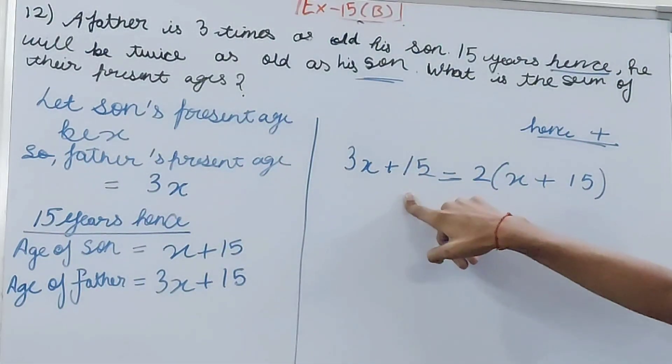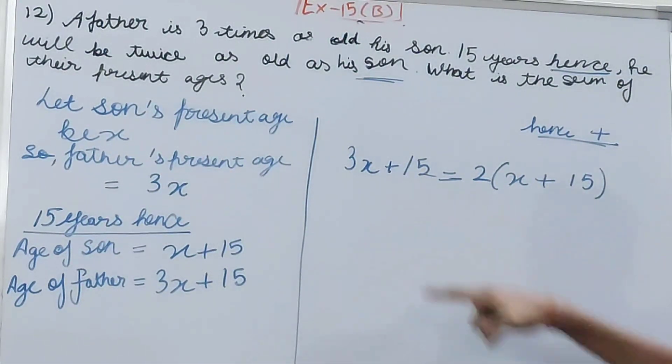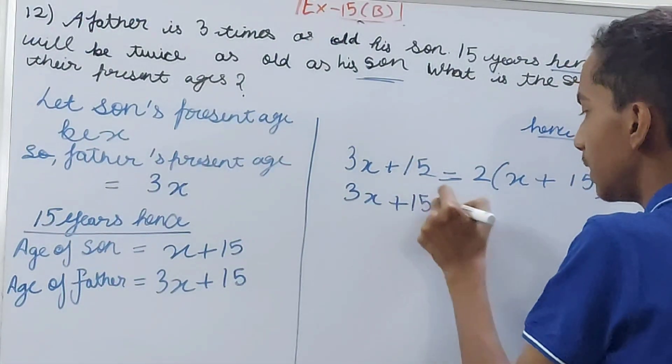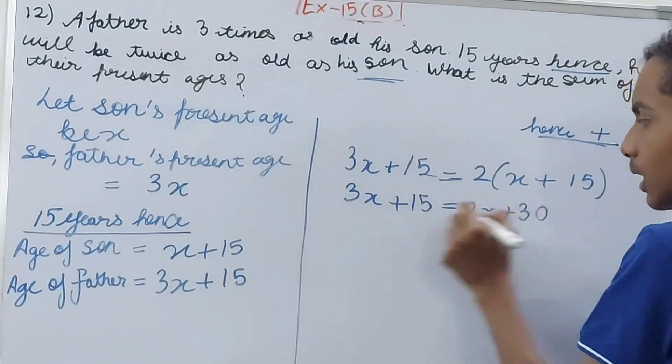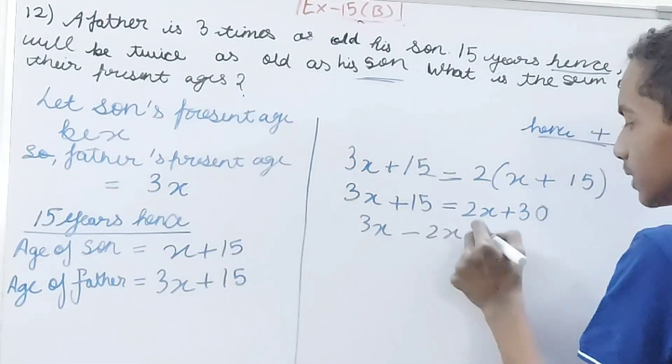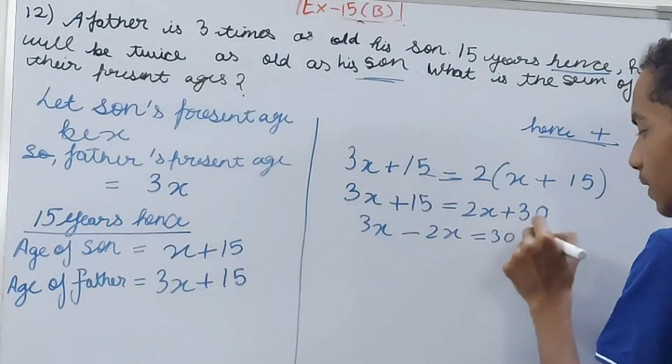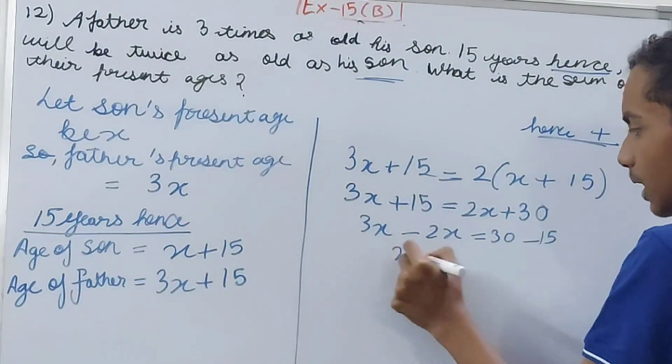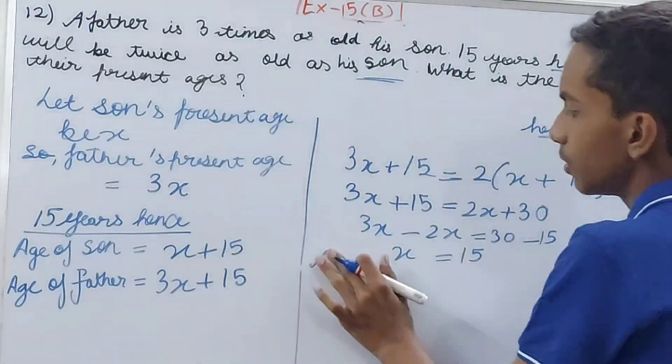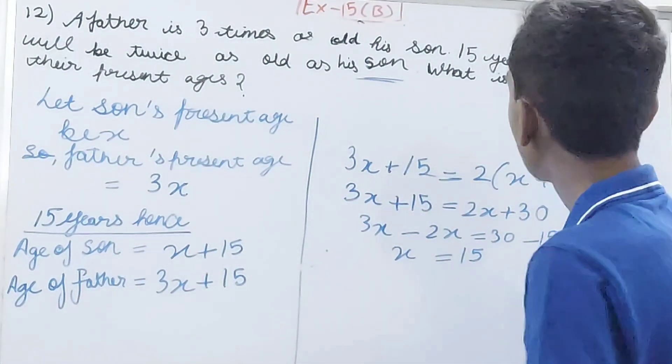Let's open the brackets and solve this equation. 3x + 15 = 2x + 30. So 3x minus 2x equals to 30 minus 15. x equals to 15. And this is not the answer - it is asking what is the sum of their present ages.